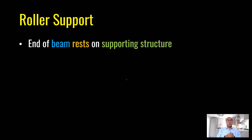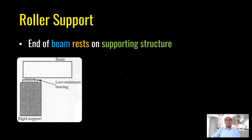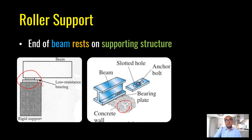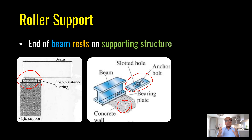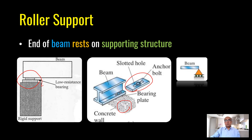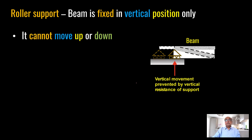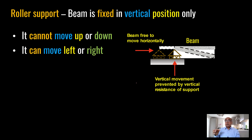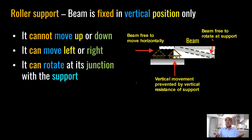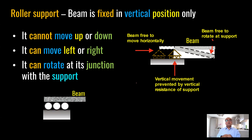Roller supports are mainly used in bridges. Here, a beam rests on a supporting structure via a low bearing. A concrete wall with anchor bolts allows slight horizontal movement — not in meters, really just a few millimeters. In a roller support, the beam is only fixed in the vertical direction: it cannot move up and down, but it can move left or right and it can rotate at its junction with the support.